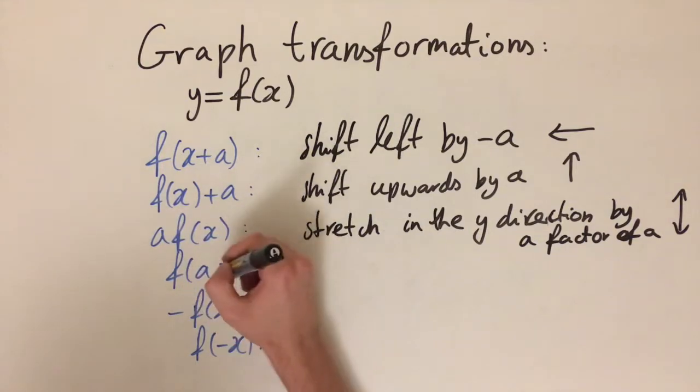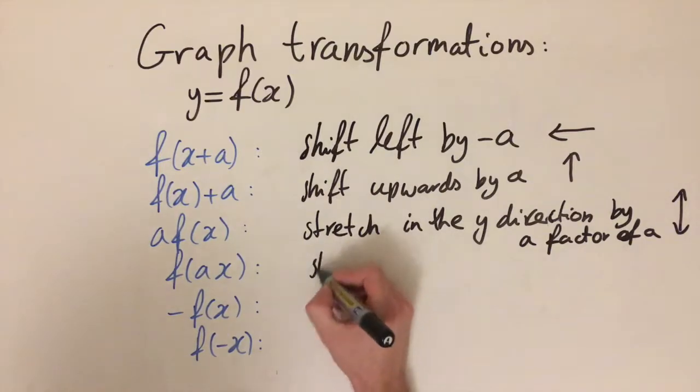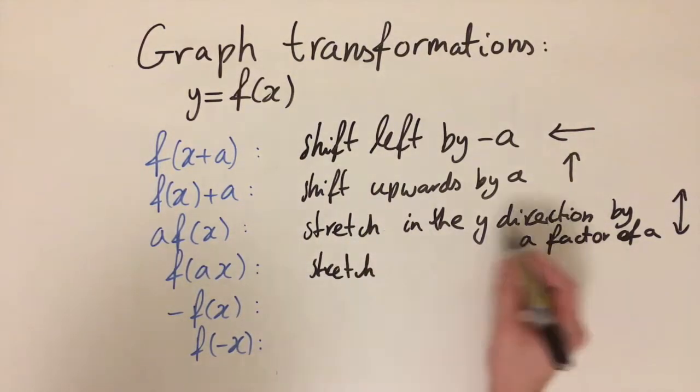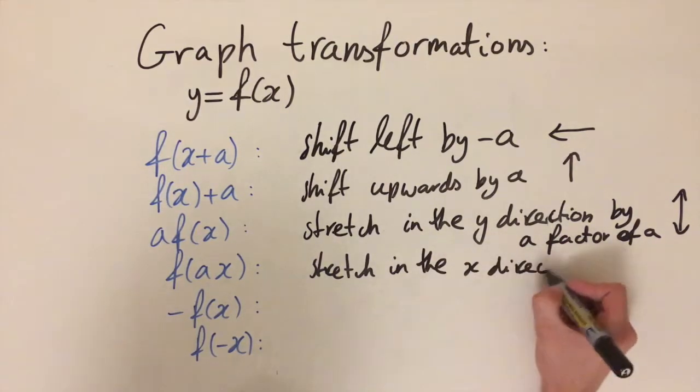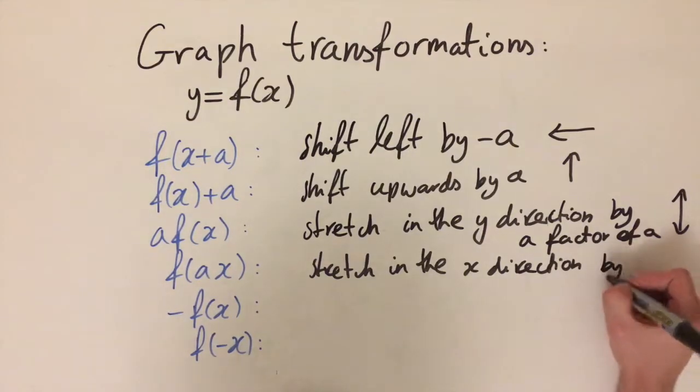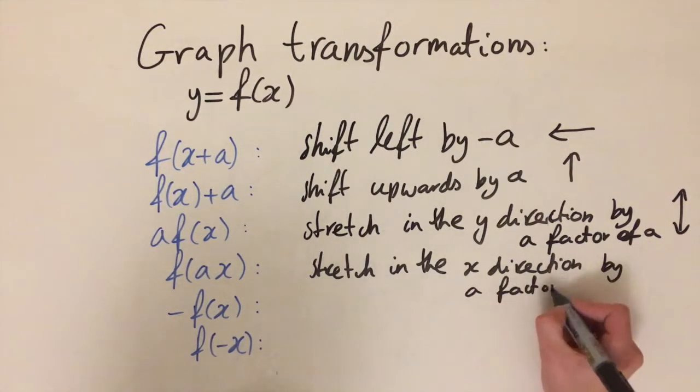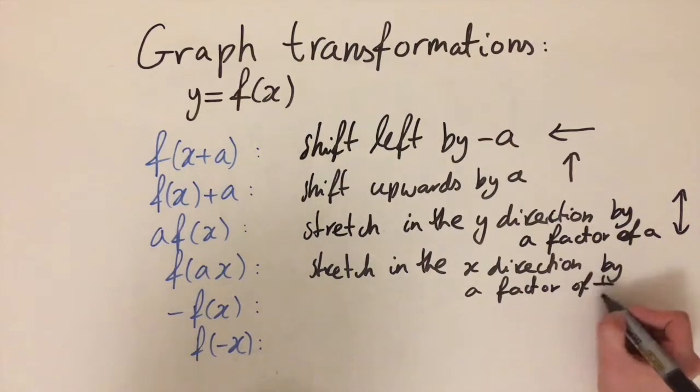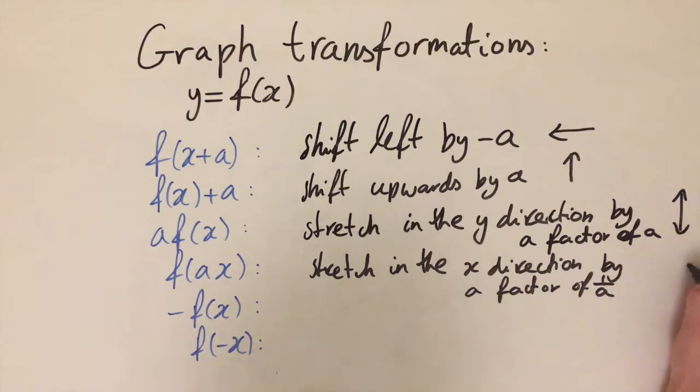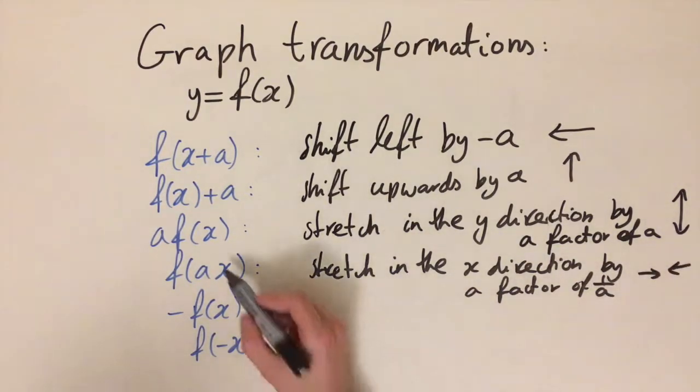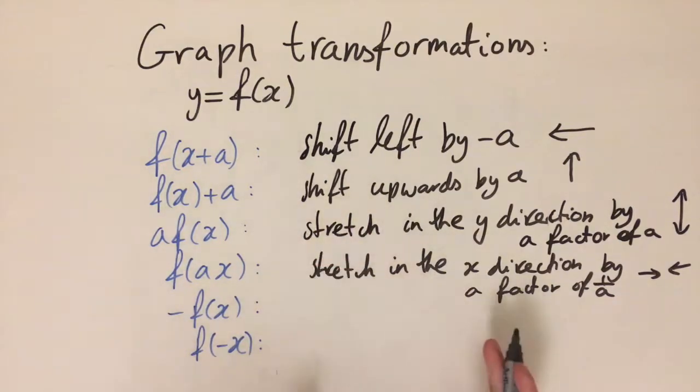And then if instead we have the a inside the brackets—if we are multiplying every input x by a—this corresponds to a stretch in the x direction, and this time by a factor of one divided by a. So we are stretching it in the horizontal plane, but we're actually squeezing it in. If we multiply by a and a is positive, then we are shrinking the graph in the horizontal direction by a factor of one over a.